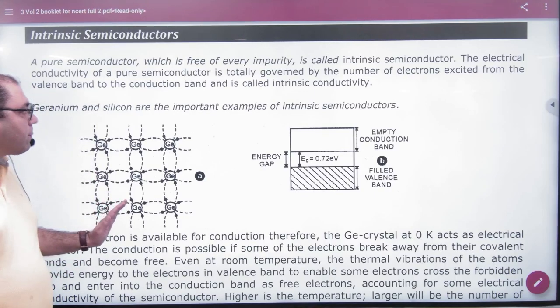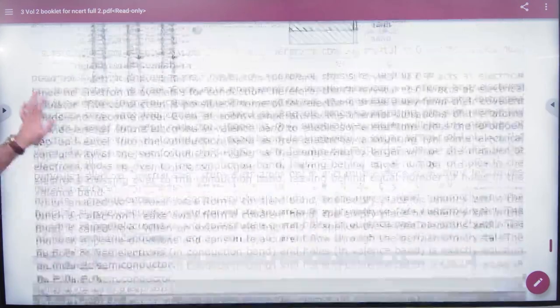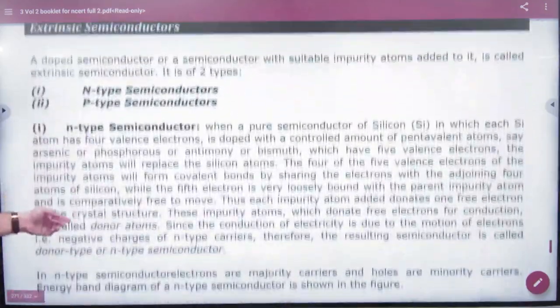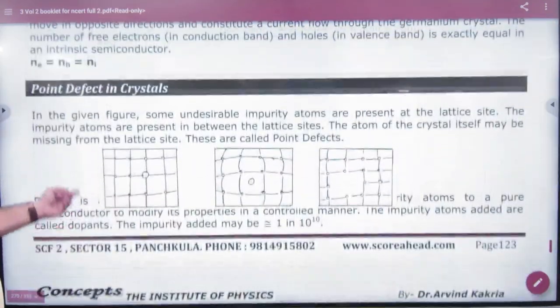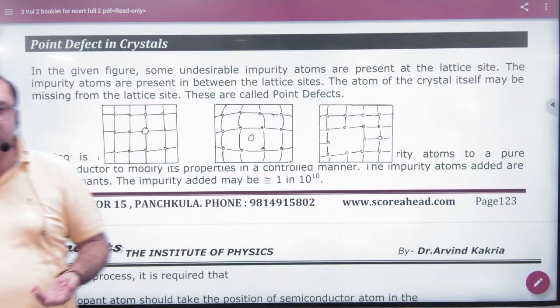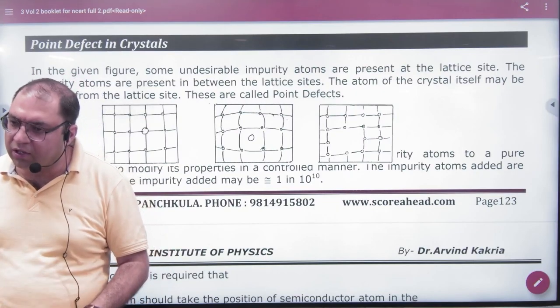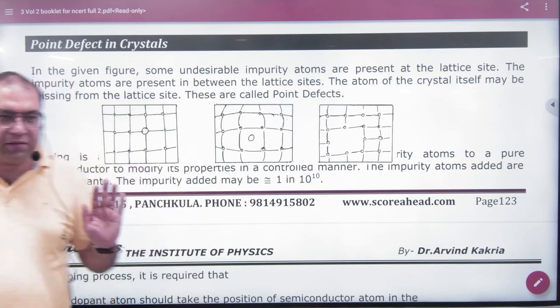Intrinsic Semiconductor is pure germanium or pure silicon. So what is it basically? It is pure. But I want to make it impure. What will I do to make it impure? So this is Intrinsic.